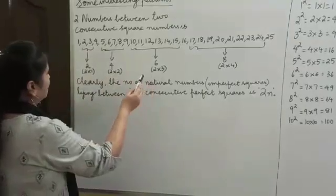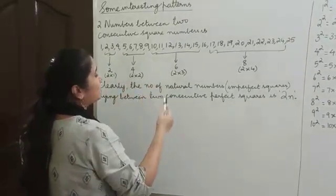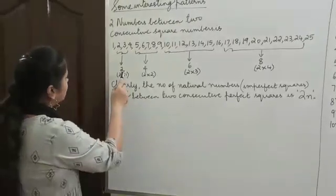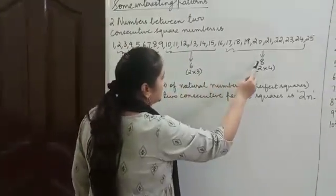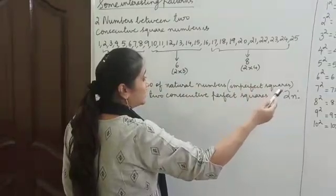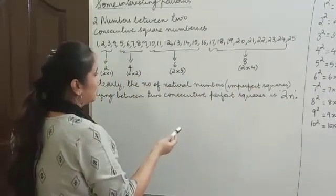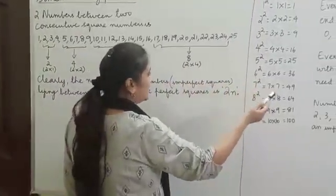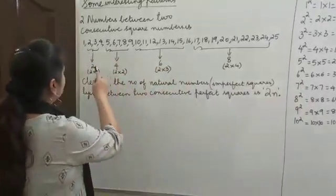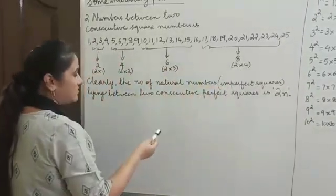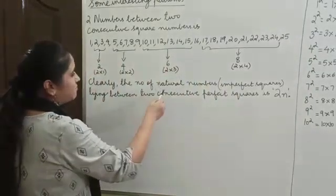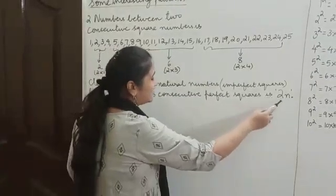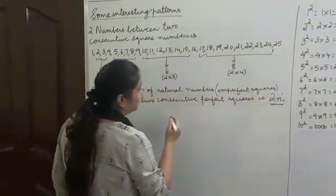So, what we have been seeing is the number of imperfect squares, or the number of natural numbers, lying between two consecutive perfect squares. Looking at the results: first we have 2, then 4, then 6, then 8. So this should continue with 10, 12, 14, and so on. These are multiples of 2. Hence, the expression to find the number of natural numbers or imperfect squares between two consecutive perfect squares is 2n — because of the multiple of 2.